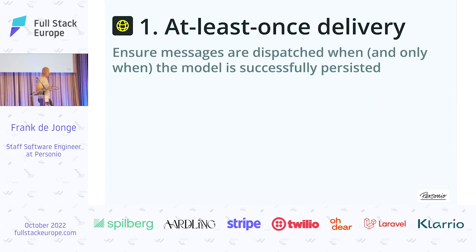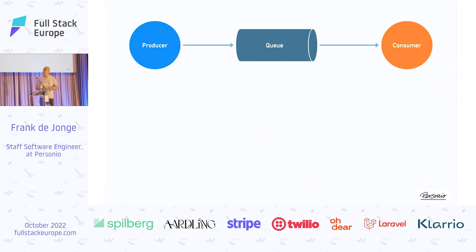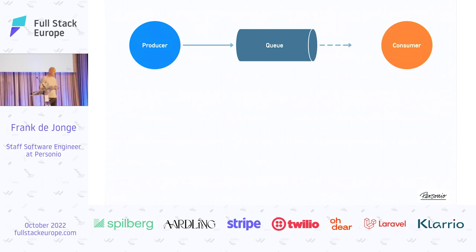Let's go deeper into these requirements — explore why they are relevant and how we can cater to them. The first is at-least-once delivery: ensuring that messages are dispatched once, and only when the model is successfully persisted. We expect a payment model has done the payment, we need to persist it, and we also need to produce an event. The normal failure scenario is the producer sends the message to the queue, the consumer gets it, tries to process it, but something goes wrong — and this is just a normal retry loop. What I think is more interesting is when stuff fails to get into the queue in the first place — this is where we can get inconsistencies.